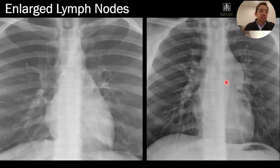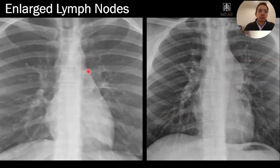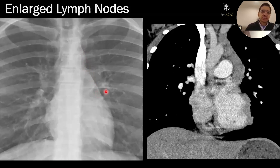Here's another example of an abnormality in that region. In this patient, we have bulging of the AP window, and that is because this person has enlarged lymph nodes — this is a normal to compare to. On CT there are lymph nodes in the AP window region. This person had lymphoma.